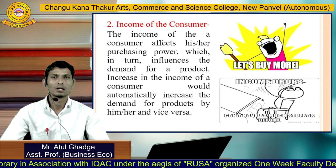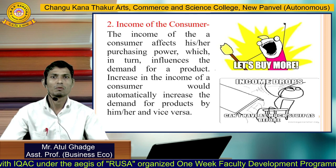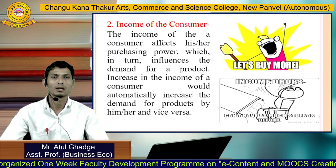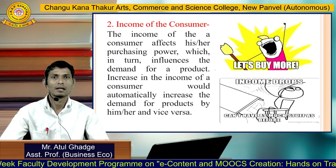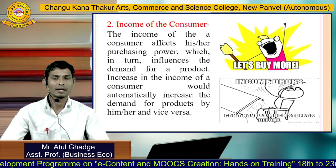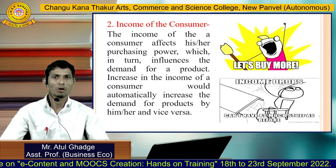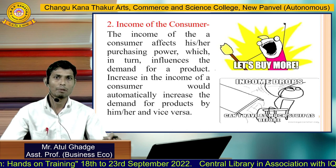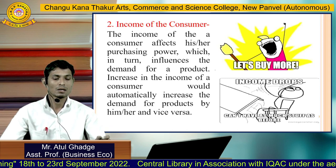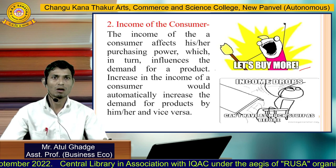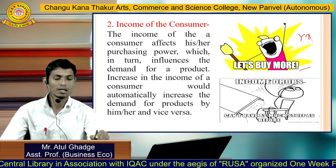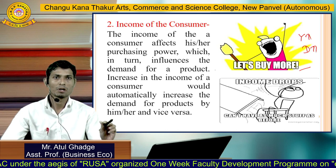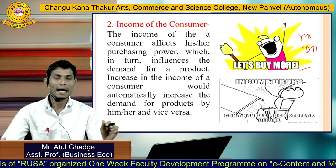The next determinant is income of the consumer. Income affects purchasing power, which in turn influences demand for a product. An increase in income would automatically increase demand, and vice versa. As I mentioned, ability means financial ability — income is very important because having desire and willingness alone is not demand; ability is also important. Income is your ability. As income increases, demand for the commodity increases. There is a direct relationship between income and quantity demanded.